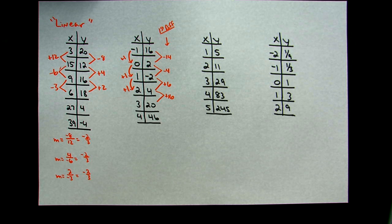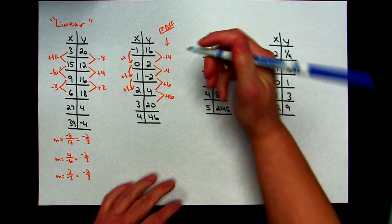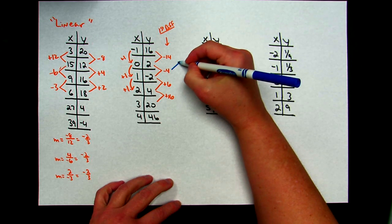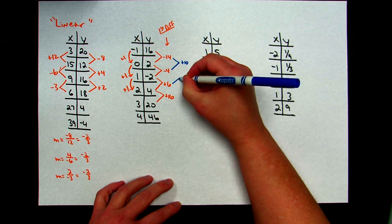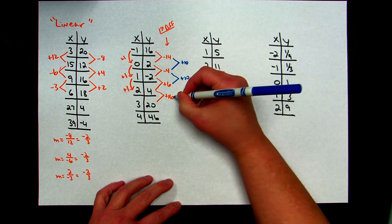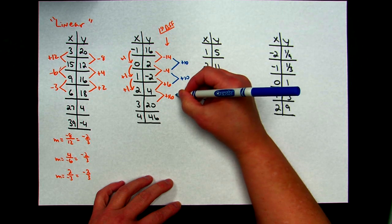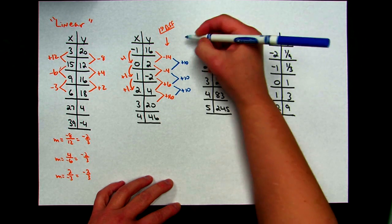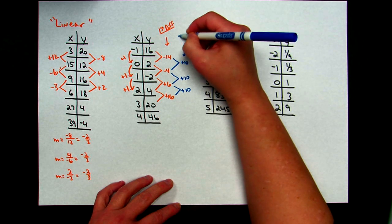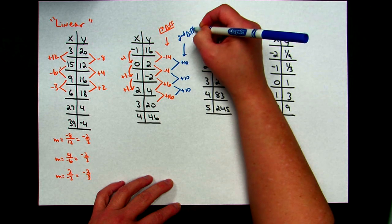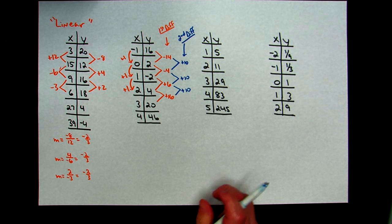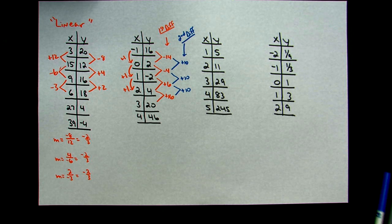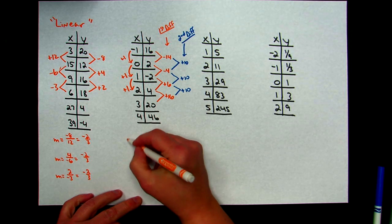Now I'm going to look at the second difference. Negative 4 minus negative 14 is a difference of plus 10. Then 6 take away negative 4 is also a difference of 10. And 16 take away 6 is a difference of positive 10. This is my second difference, and since we have a common second difference, we know that we have a quadratic function.